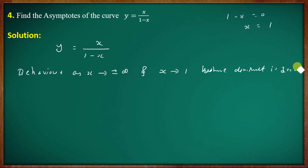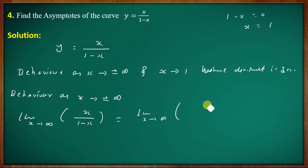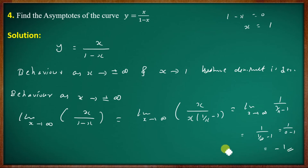The denominator is 0 at x equal to 1. For horizontal asymptotes, the behavior as x tends to plus or minus infinity: the limit as x tends to infinity of x by 1 minus x equals negative 1.